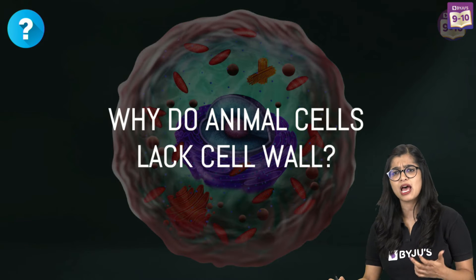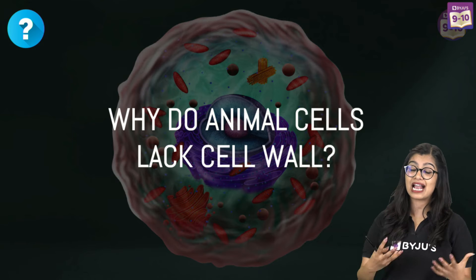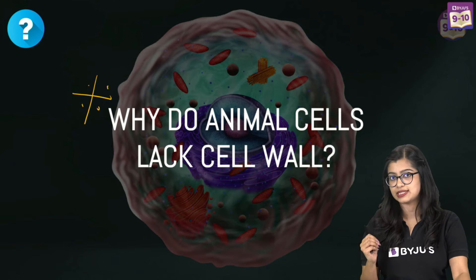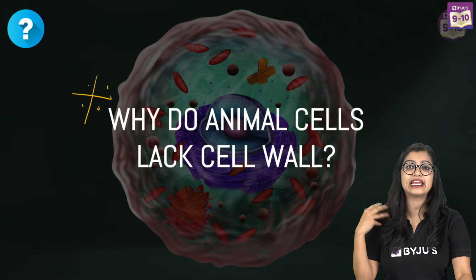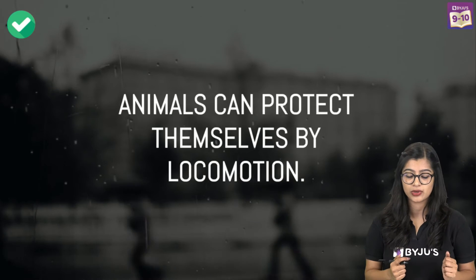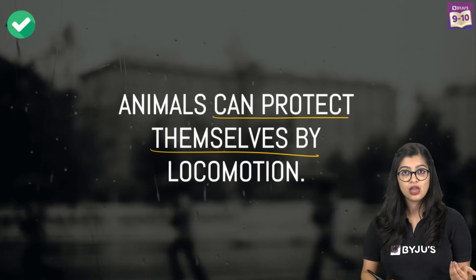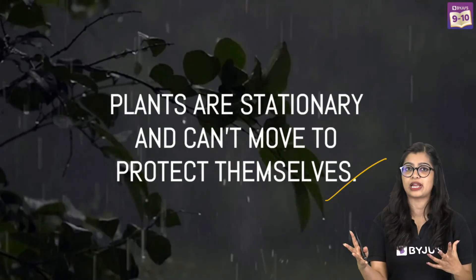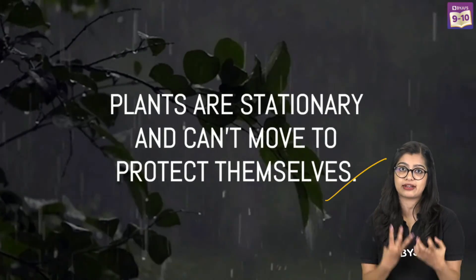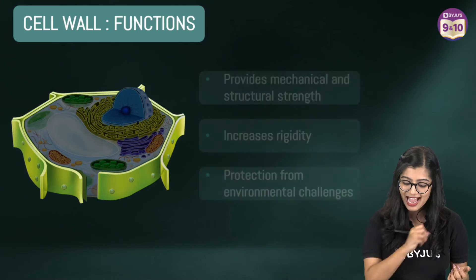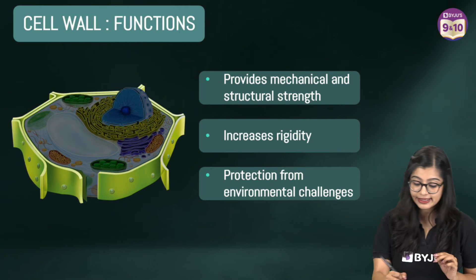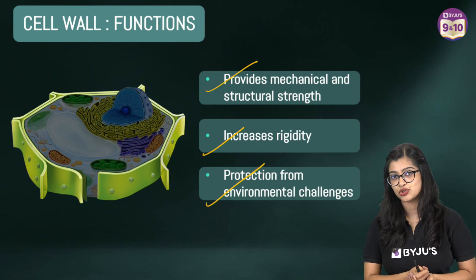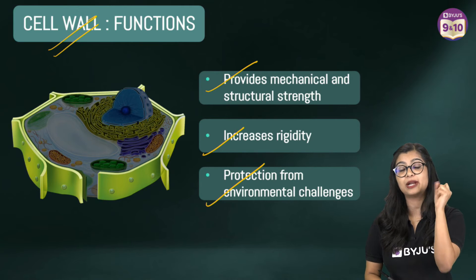But why do we observe a cell wall only in plants and not in animals? This is a very important question you can get for one or two marks. Animals have the inherent ability to move around — they are not stationary and they can protect themselves by locomotion. Plants, on the other hand, are fixed to the ground and don't have the ability to move and protect themselves, which is why they require an additional protective layer, rigidity, and support. That is where the cell wall comes in — it provides mechanical and structural strength, rigidity to the cell, and protects it from environmental challenges.